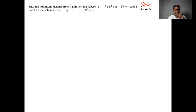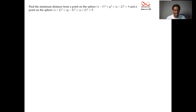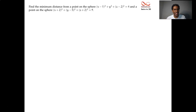Question number two — spheres. I have a sphere with one equation and another sphere with a second equation. Two spheres in space. Find the minimum distance from a point on one sphere to a point on the other. It seems kind of big — a point? What do you mean, a point?